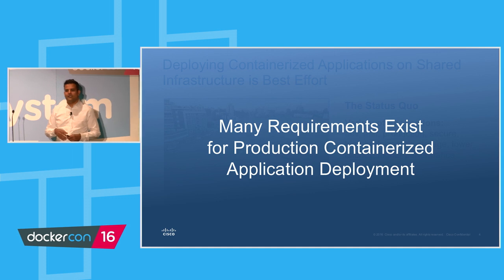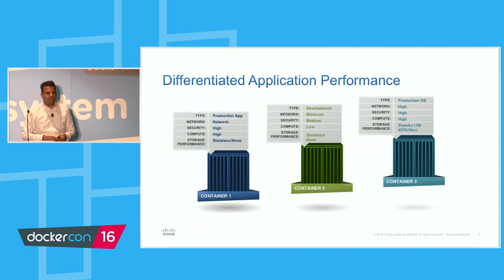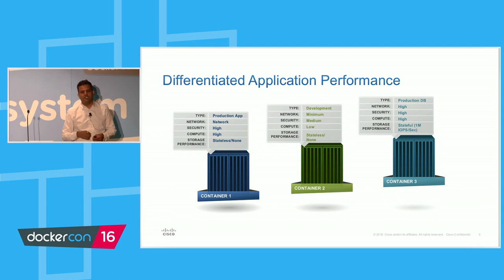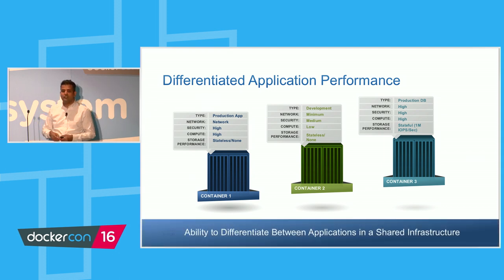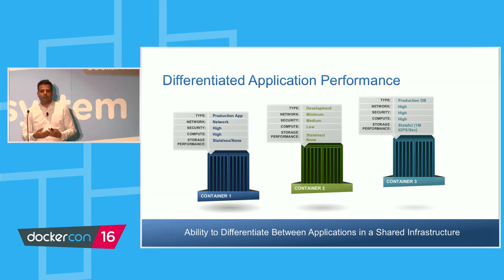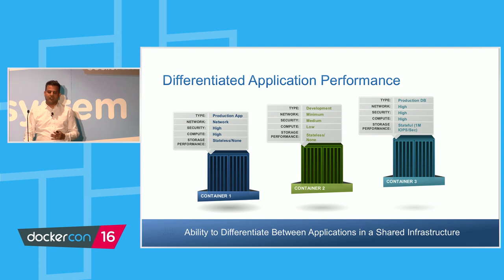One of the first requirements I see coming up: I have different types of applications with different types of requirements — networking, storage, persistent storage, security. Maybe I don't need as much bandwidth because it's a development app, not a production app. In a shared infrastructure, you need to guarantee those requirements — you can't just hope it works. That's fine for development, but in production you really need to make sure it works. How do you differentiate a production application from a development application when you deploy with Docker Compose?